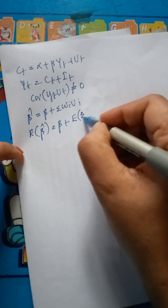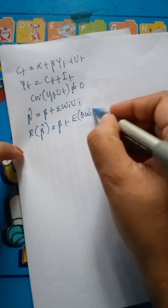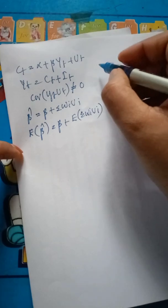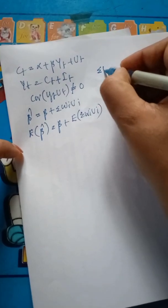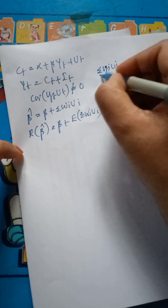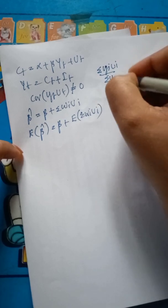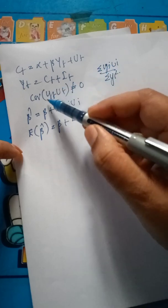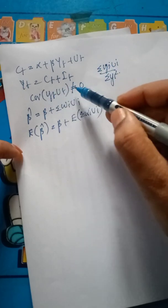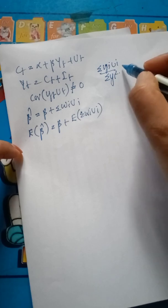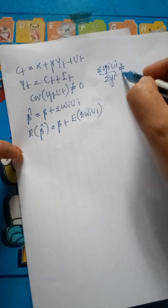We know that wi in this equation equals sigma(yi * ui) divided by sigma(yi squared). We have already proved that the covariance of Yt and Ut is not equal to zero. Therefore, the expectation of the term sigma(wi * ui) may not equal zero.